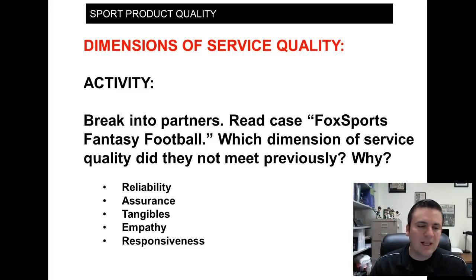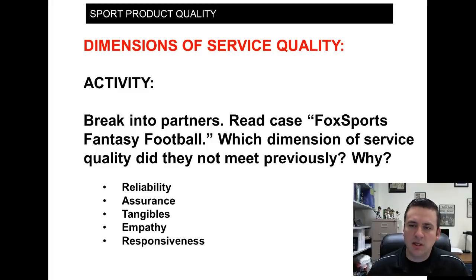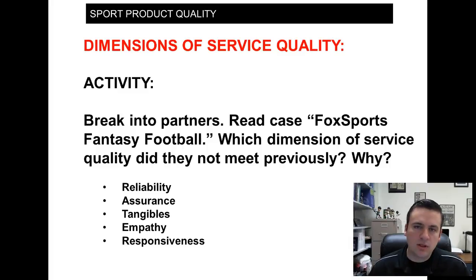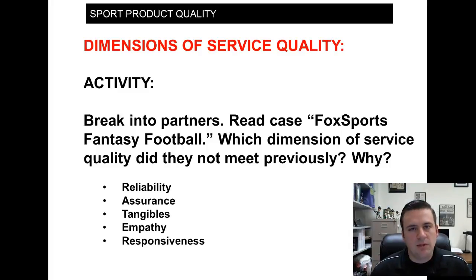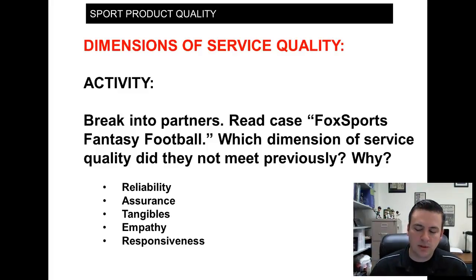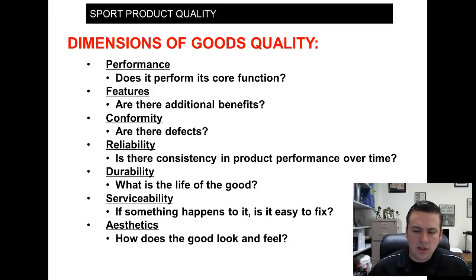For a project or in-class assignment on D2L, there's an article called 'Fox Sports Fantasy Football' attached to the dropbox assignment. I want you to look at the different dimensions of service quality — did they previously meet those dimensions in the article, and why or why not? Those dimensions are Reliability, Assurance, Tangibles, Empathy, and Responsiveness — RATER. Go through and do a RATER analysis for the Fox Sports Fantasy Football example.